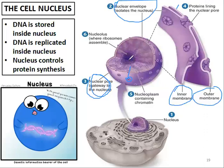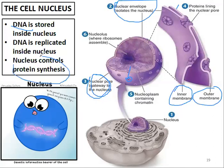The nucleus is filled with DNA. The DNA is stored inside the nucleus, where it is replicated. The replication of DNA inside the nucleus controls another process. The process of protein synthesis cannot happen without the replication of the DNA inside the nucleus and its transcription into RNA.